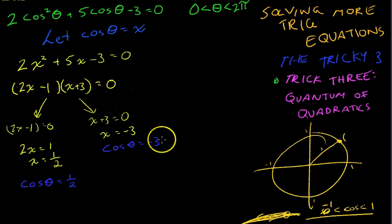My point is that when you do a question like this, often you'll get an answer that is either greater than 1 or less than negative 1. In other words, not between negative 1 and 1. If that's the case, we can disregard.